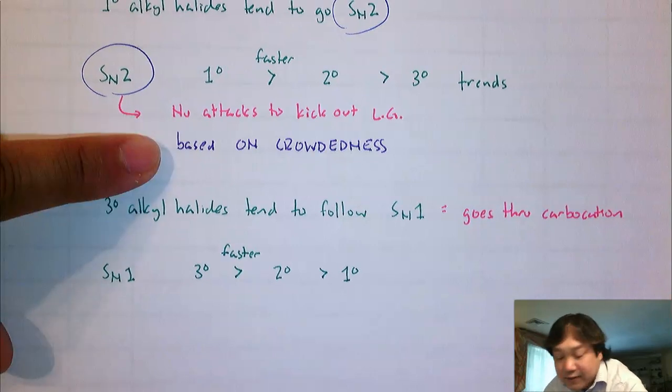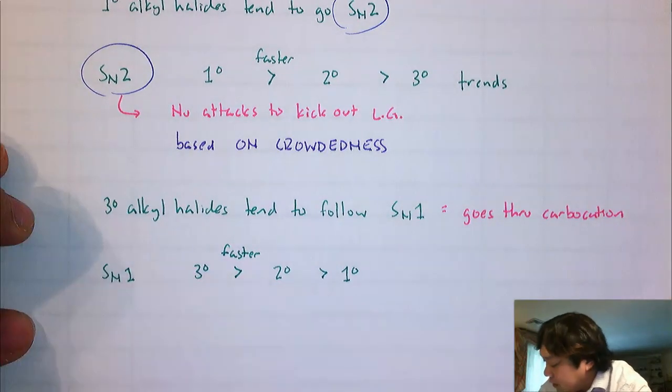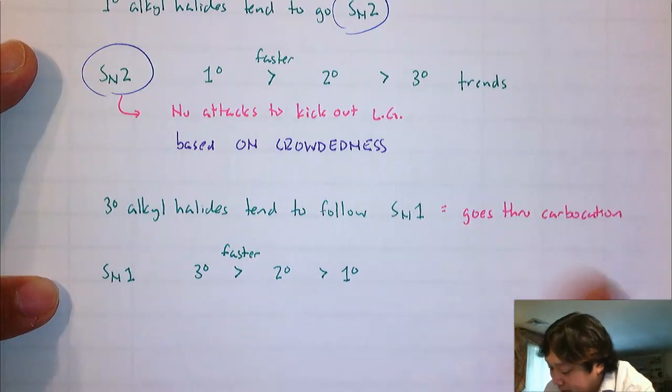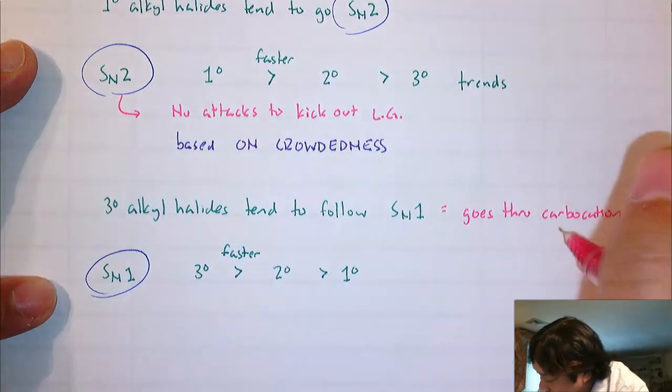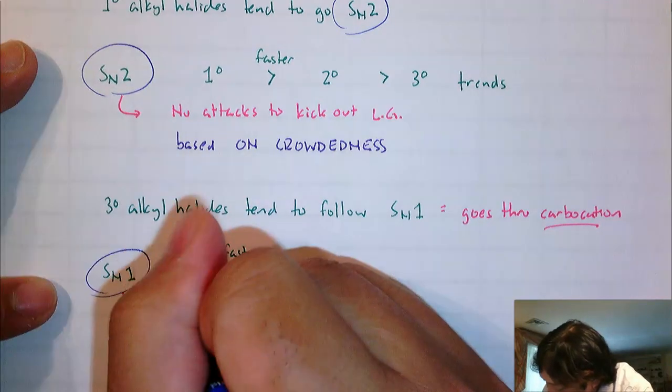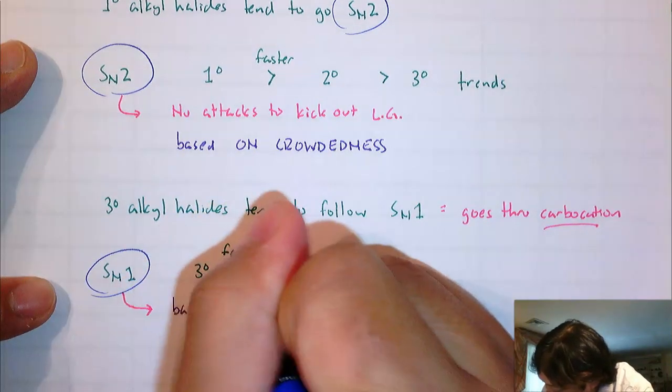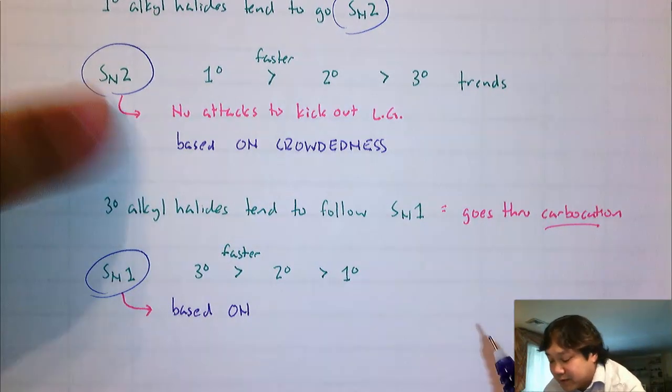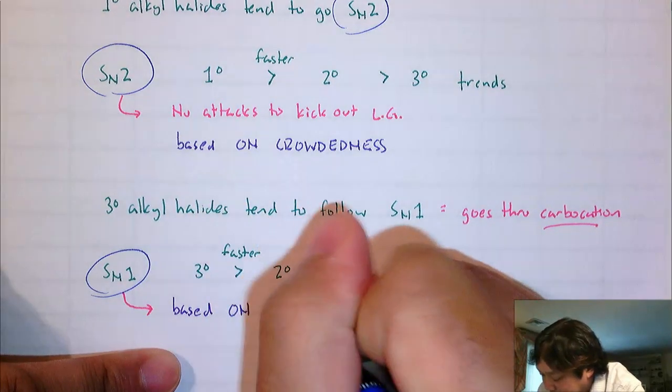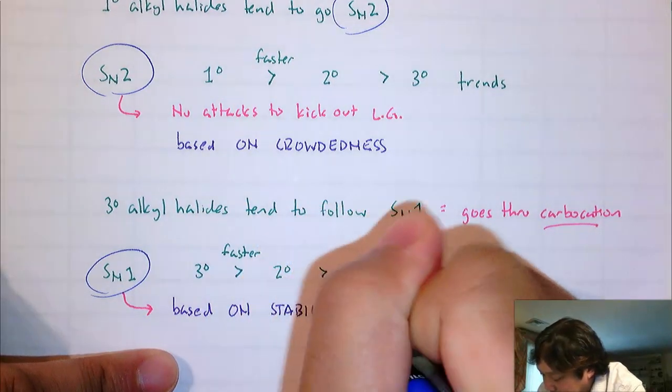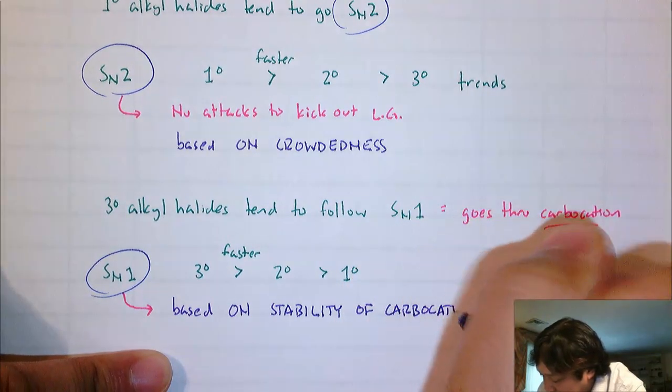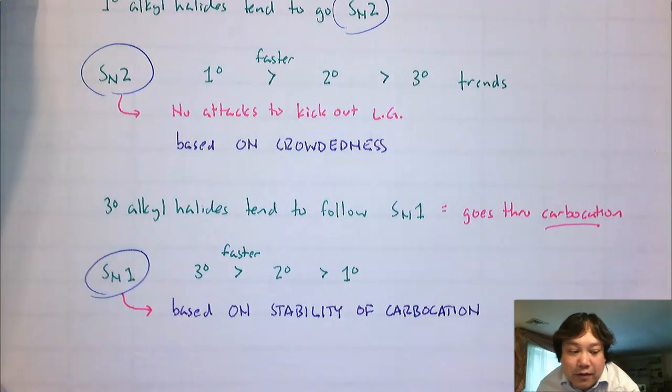So the trend here, SN1: Tertiary faster than secondary, faster than primary. Why? For SN2, it was based on crowdedness. For SN1, it's going to be based on stability of the carbocation.